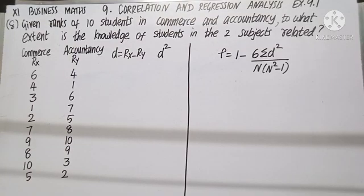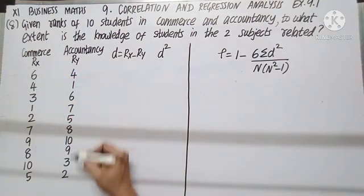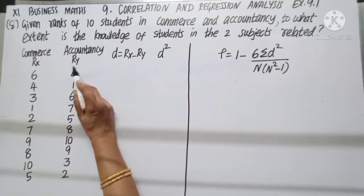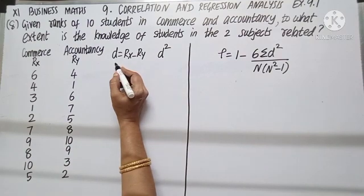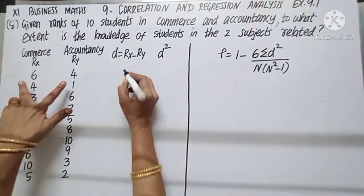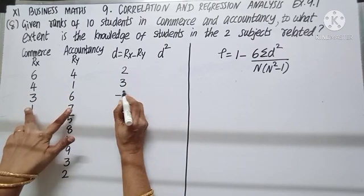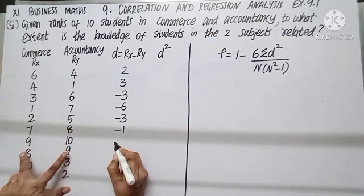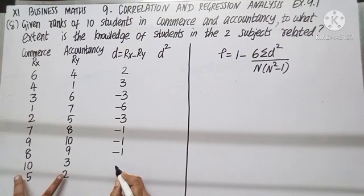Question number 8: Given ranks of 10 students in commerce and accountancy, to what extent is the knowledge of students in the two subjects related? Let us calculate rank correlation since we are given ranks. Call commerce ranks as Rx and accountancy ranks as Ry. Finding D, that is Rx minus Ry: 6 minus 4, 4 minus 1, 3 minus 6, 1 minus 7, 2 minus 5, 7 minus 8, 9 minus 10, 8 minus 9, 10 minus 3, 5 minus 2.